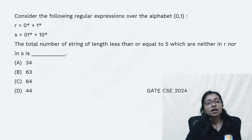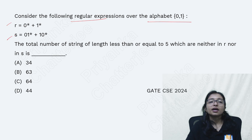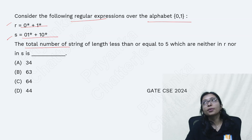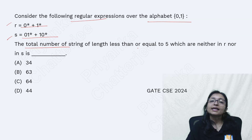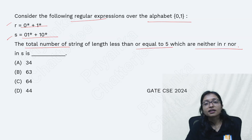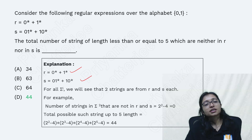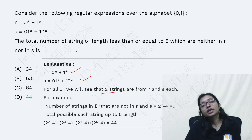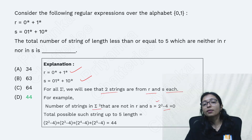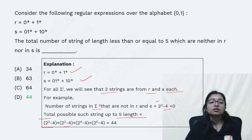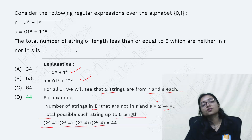Now this is the last question. Consider the regular expressions R1, R and S over the alphabet - this is given. Now what is the total number of strings of length less than or equal to 5 which are neither in R nor in S? What we can do: I have to take all possibilities. For example, for strings of length 2: 2-squared minus 4. If total possible strings of length up to 5 are there, then it will be (2²-4) + (3²-4) + (4²-4) + (5²-4), which gives a total of 44. The answer will be 44.